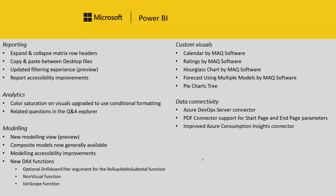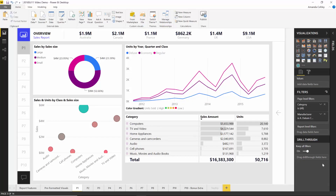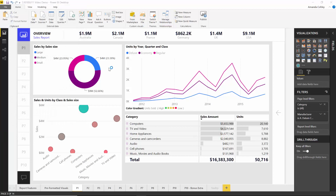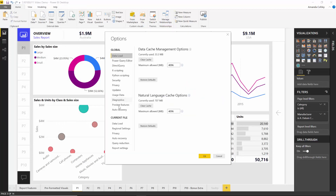It's now part of the report page itself instead of being off to the side. It feels and looks like it's part of the report page. You can control the formatting of it, and you also have a bunch more functionality in terms of what's available to your consumer. This new filter pane experience is a preview feature, so the first thing you'll have to do is go into the options dialog and enable it under preview features.